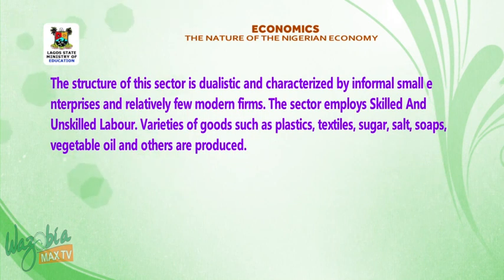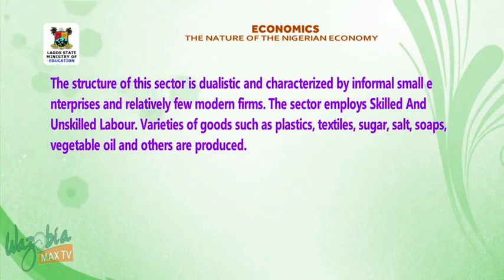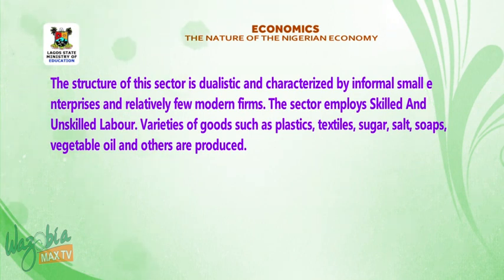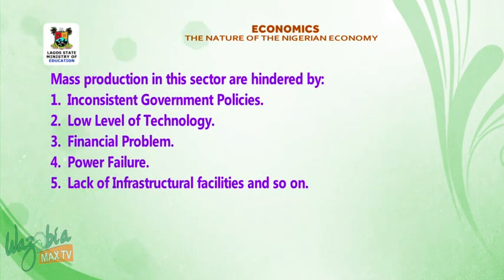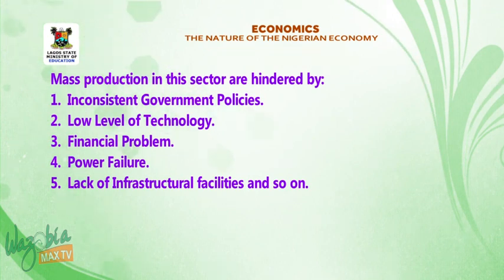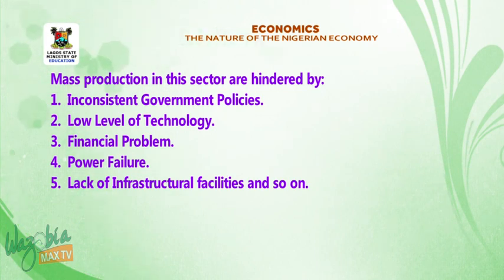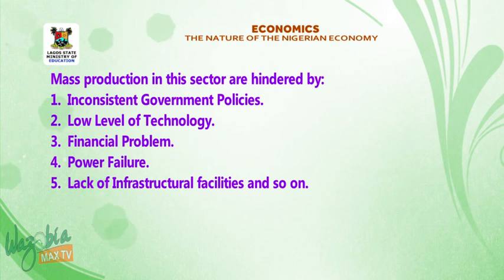The sector employs skilled and unskilled labor. Varieties of goods such as plastics, textiles, sugar, salt, soap, vegetable oil, and others are produced. Mass production in this sector is hindered by: 1. Inconsistent government policies. 2. Low level of technology. 3. Financial problems. 4. Power failure. 5. Lack of infrastructural facilities.